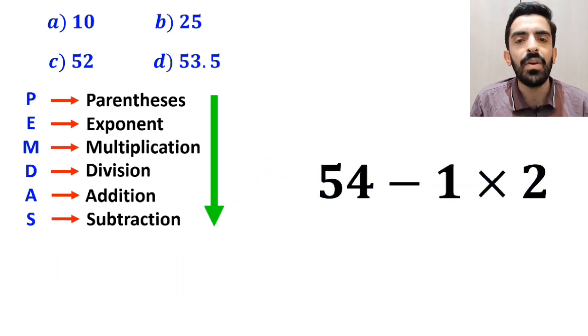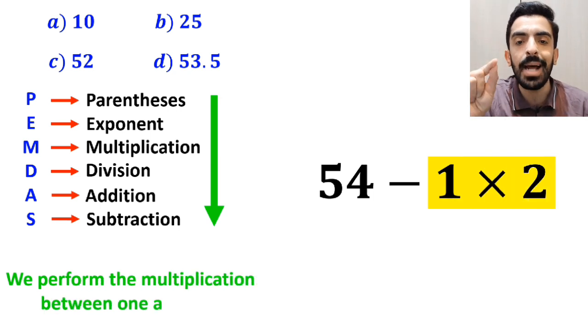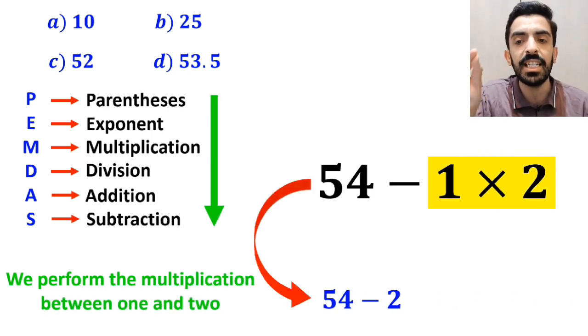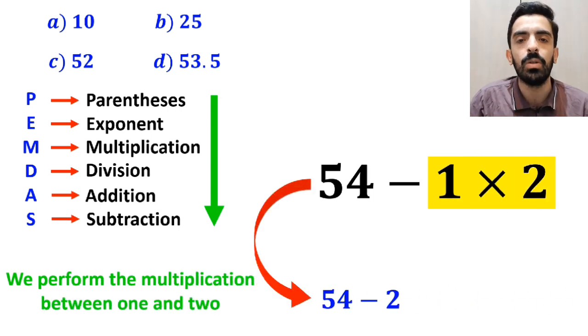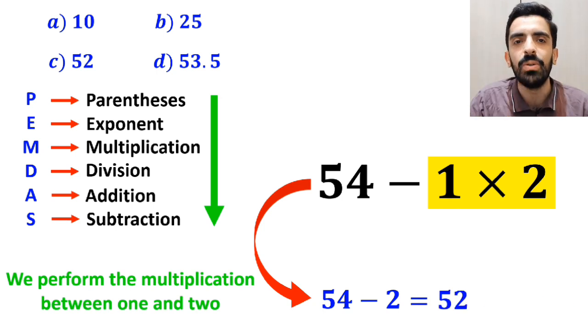In the final step, we perform the multiplication between 1 and 2, which simplifies this expression to 54 minus 2. And finally, the value of this expression will be 52.